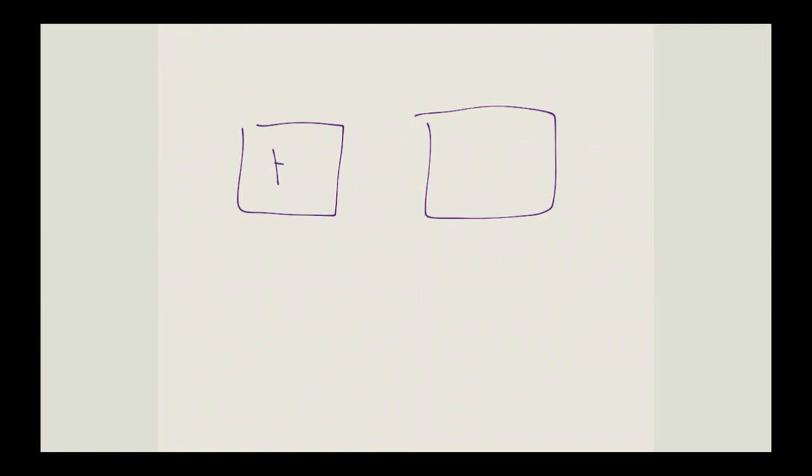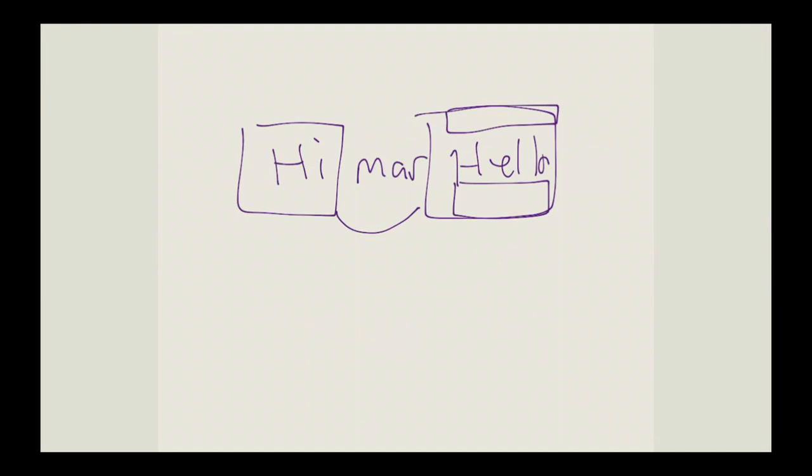Let me draw a picture. We have two boxes — two divs on the page — and inside is some text: 'hi' and 'hello'. The space between them is the margin. The space inside the div, between the border and the text — that is the padding. So if the border is too close to the text, increase the padding. If the two divs' borders are too close together, increase the margin.